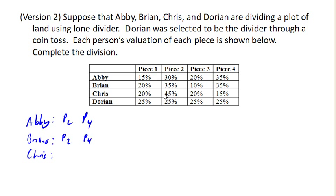Chris's declaration is going to be only piece 2. And of course Dorian values all of them equally.